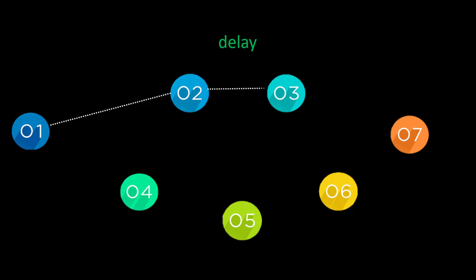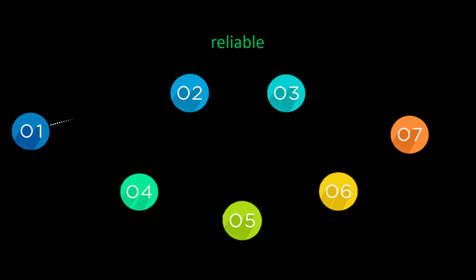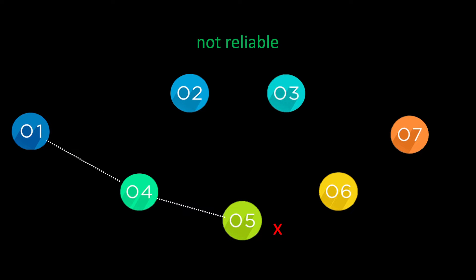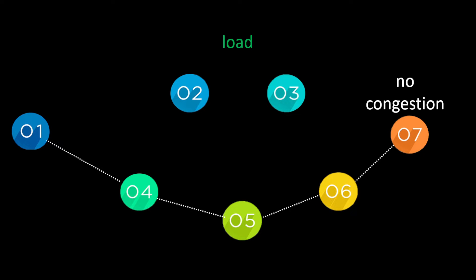Delay is another cost — there's a slight delay on nodes along the top route before they forward data, compared to the bottom route. Reliability uses values from one to two-hundred-and-fifty-five; a high value like 255 is good, while a low value indicates a problem, such as a fault just after node five. Load is also a factor — the top route may already have congestion like a traffic jam, while the bottom route is clear.